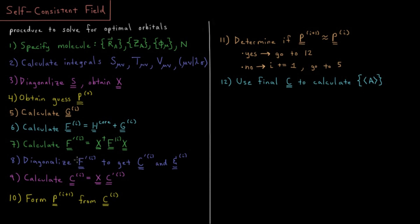We're going to then diagonalize F prime to get C prime, our transformed coefficient matrix, and epsilon, our orbital energy matrix. Each of those specific to the iteration that we're on. Step nine is we're going to calculate our coefficient matrix by back transforming out from those transformed coefficient matrices. C equals X C prime that we got from the previous step.